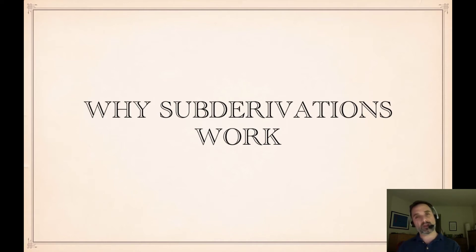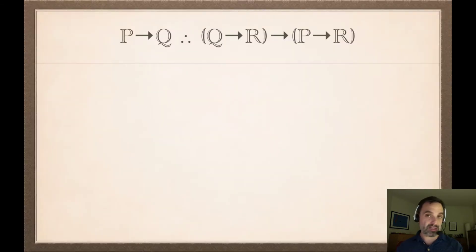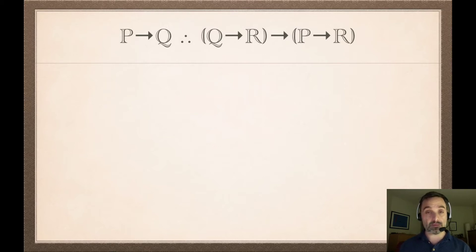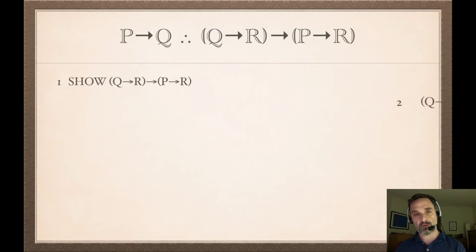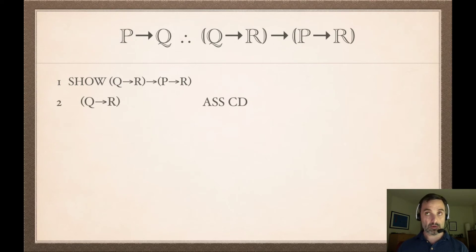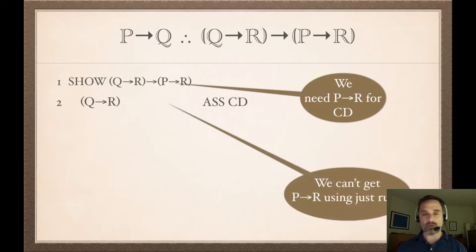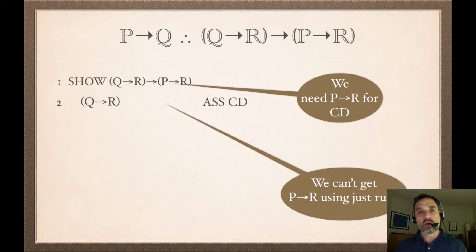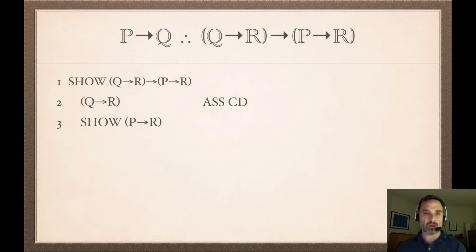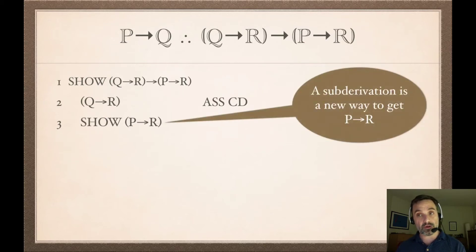I want to say a little bit about why sub-derivations are in general a good strategic idea. So we'll have an example. Let's say we have this argument: 'if P then Q' is our premise, and 'if Q then R, only if if P then R' is our conclusion — and this argument is derivable. We'd start off by saying show the conclusion, show 'if Q then R only if if P then R,' and we make an assumption for a conditional derivation. We could write down 'if P then Q,' but then we have nothing to do — we can't get to 'if P then R' just using rules. So we observe we could show 'if P then R' instead of trying to infer it — a sub-derivation.